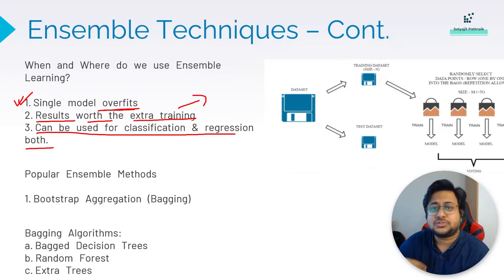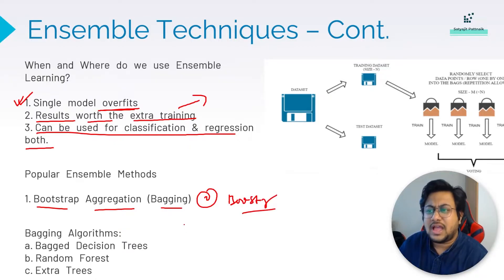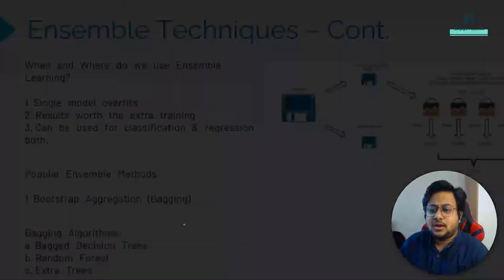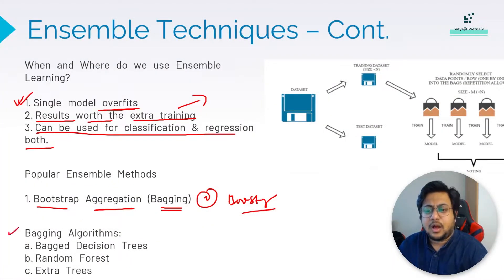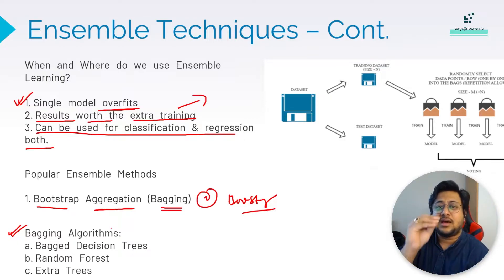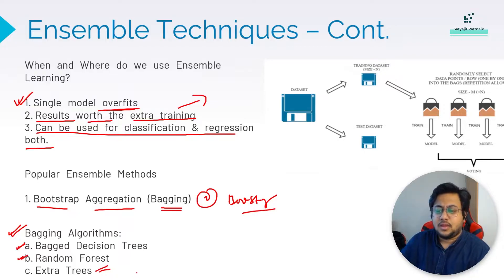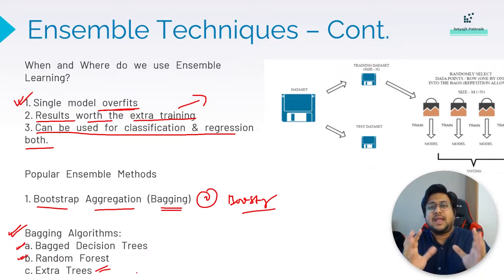The two major types of ensemble techniques are bootstrap aggregation — also called bagging — and boosting. In bagging, the most classic example is random forest. We also have bagged decision trees and extra trees as bagging algorithms.